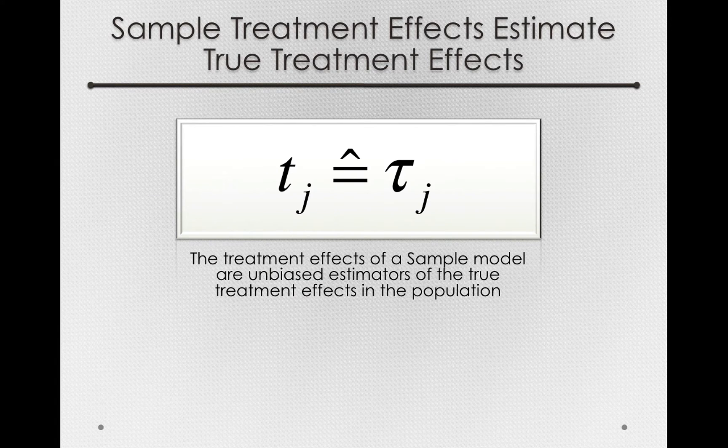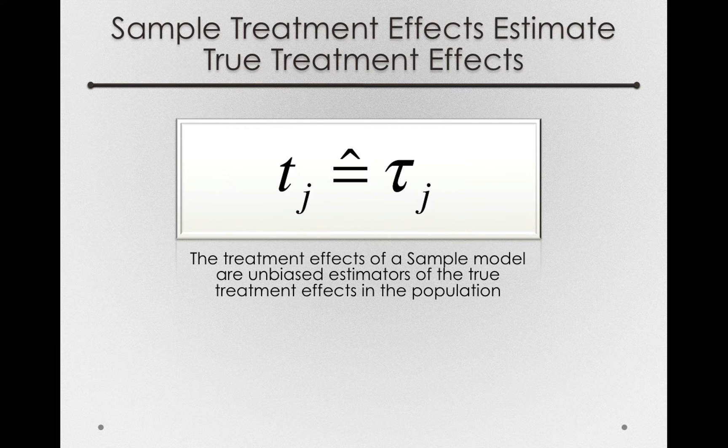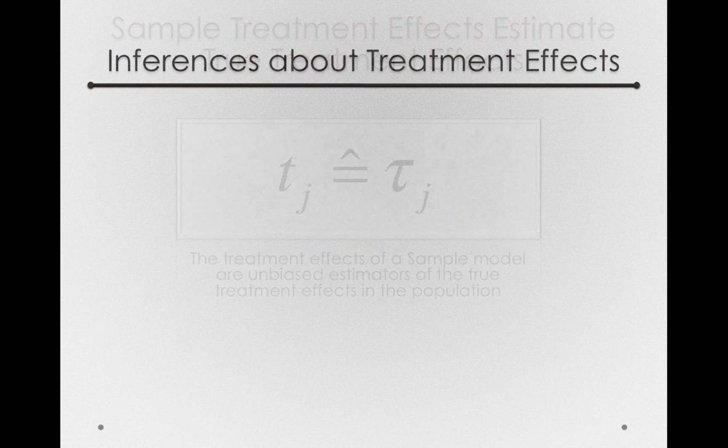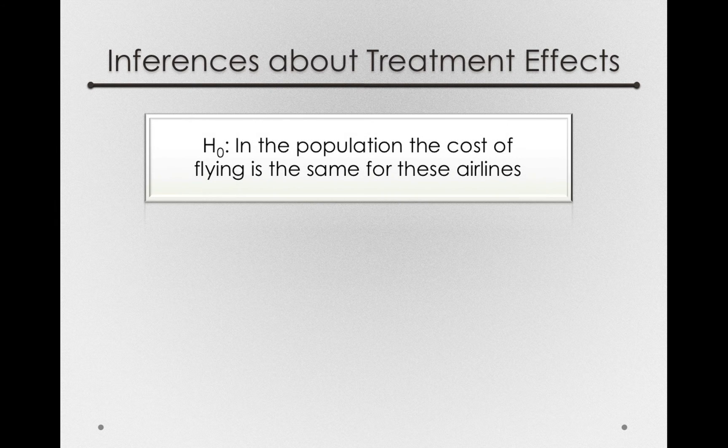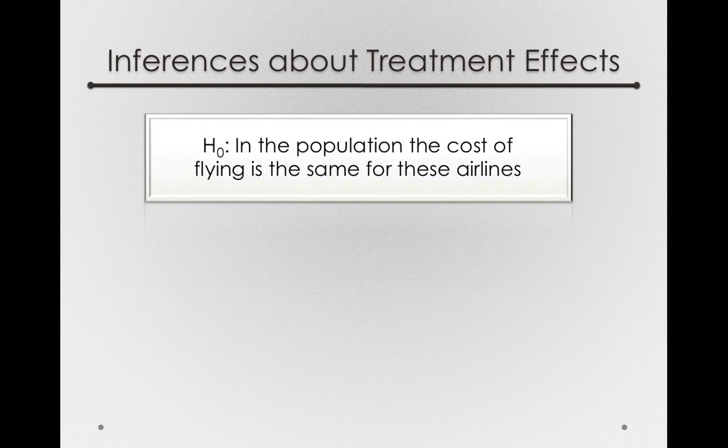And so just like we've developed before, we'll have an inferential method in which we establish a null and alternative hypothesis. In our case, the inference we'll make about a treatment effect will state in H0 that in the population, the cost of flying is the same for these airlines.